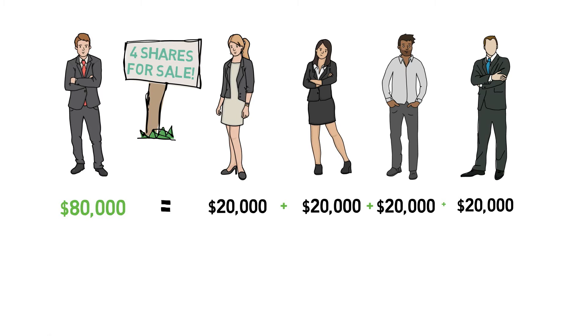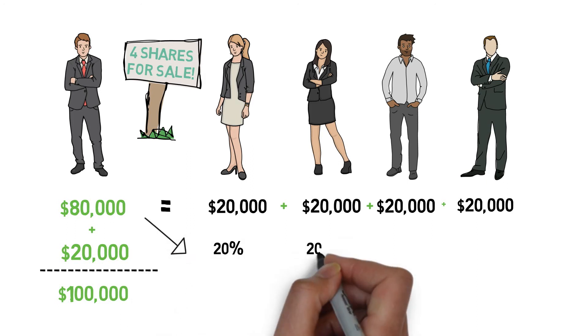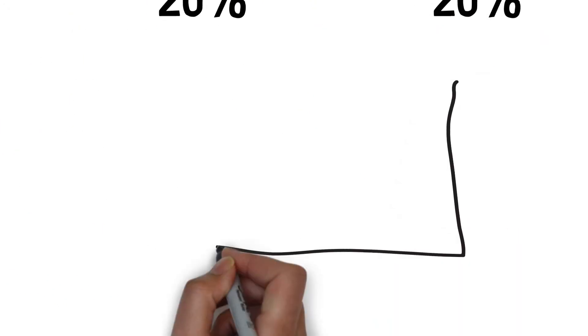This would add up to $80,000. Adding $20,000 from profits, John now has $100,000 he needed to expand his business. In return for the money, each of his friends will get a 20% ownership in the company.